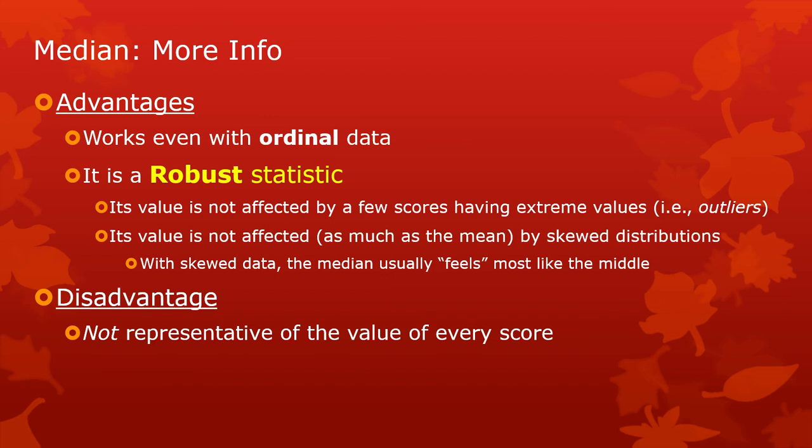The disadvantage is that the median is actually not representative of the value of every score. The way it becomes robust and not responding to these extreme values is by ignoring them, is by only responding to a few values in general. Basically, the only thing it cares about is where the middle of those numbers is. It's really only affected by like two or three values at all. All the rest of them just happen to be there as bulk. And there's no clear agreement on exactly how to calculate it with grouped data, for instance.